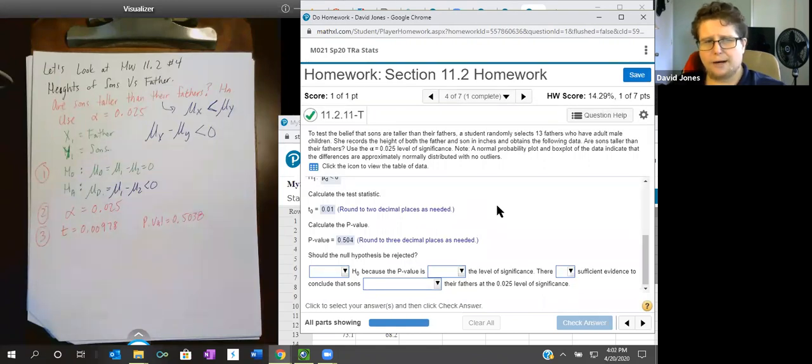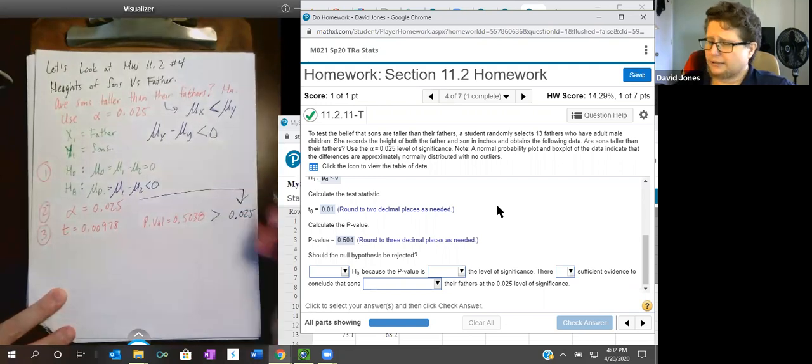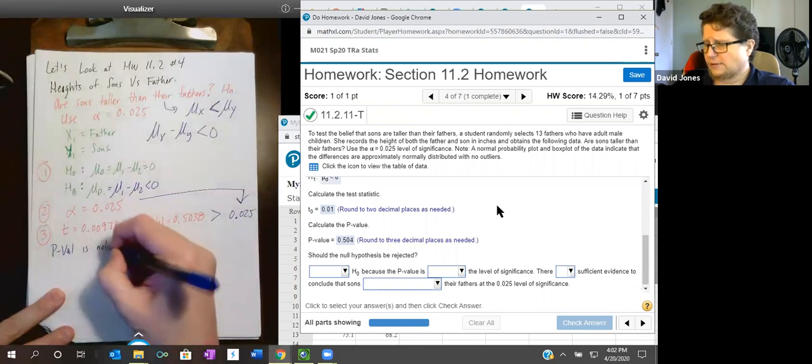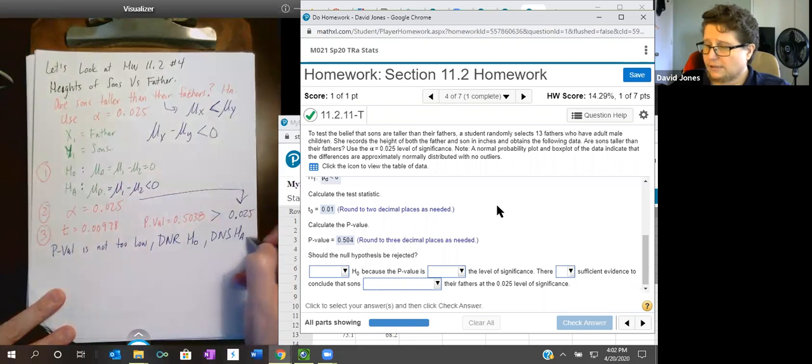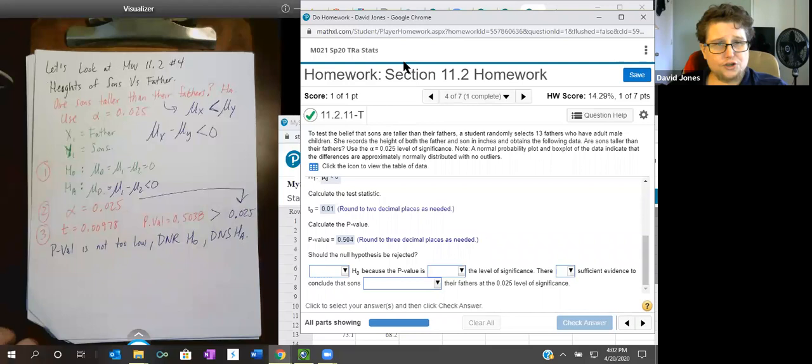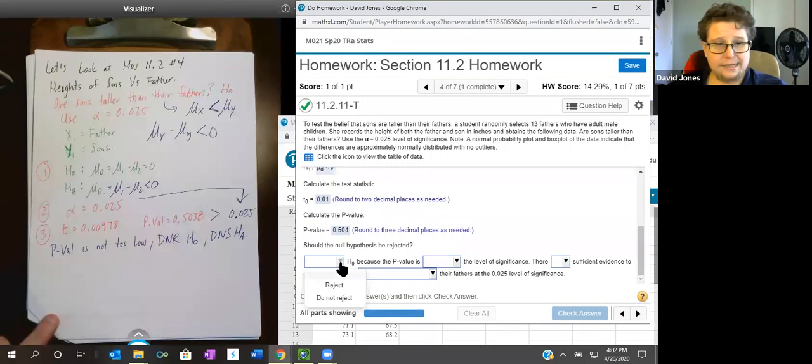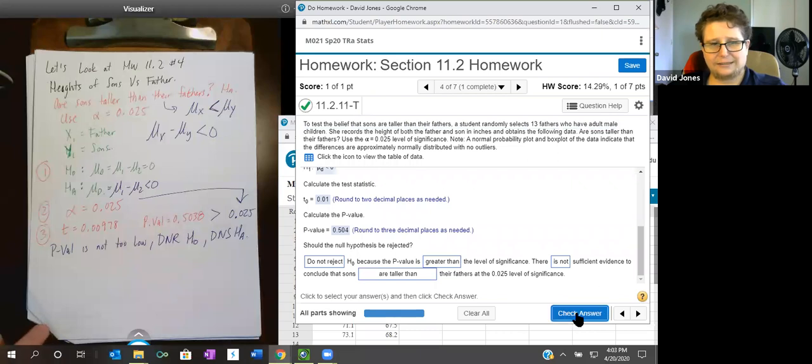Should we reject the null hypothesis? How does the P value compare to alpha? The P value is bigger. P value is not too low. So don't reject the null hypothesis, which means don't support the alternate one. Should it be rejected? We said no, don't reject it. That's what the test says. Because the P value is greater than the level of significance. P value is bigger than alpha. Which means we're not supporting HA. There's not enough evidence to support that sons are taller. We got to go with what they asked. Are sons taller? No, they're not.